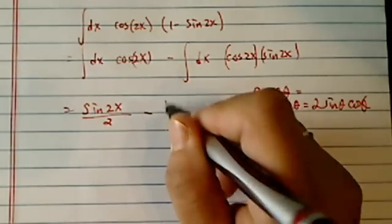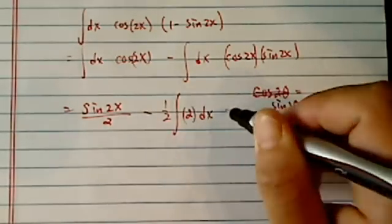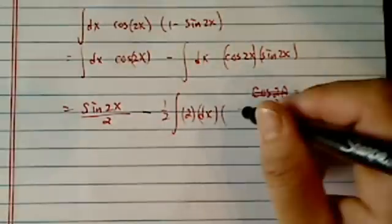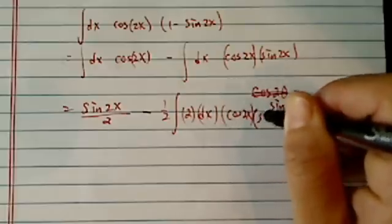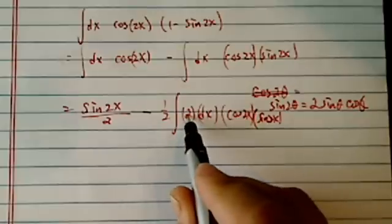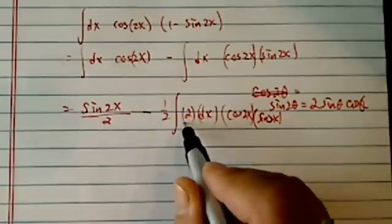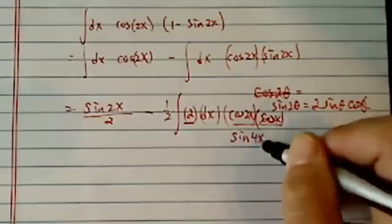Minus, let's put a half out here. So I have 2 dx and then I have cosine of 2x, sine of 2x over here. So basically I fudged this factor 2. So combine this one with this one, I would have sine of 4x over here.